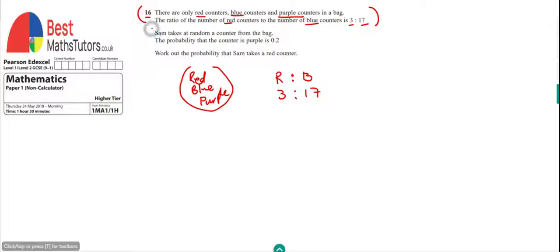And the second bit is giving us the probability that the counter is going to be purple if we picked a counter out of this bag. So we're told that the probability of getting a purple counter is equal to 0.2. And what we do know is that all probabilities add to 1.